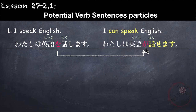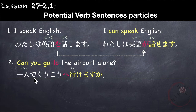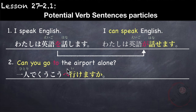Another example: Can you go to the airport alone? ひとりで空港へ いけますか？Our verb is いきます, so it becomes いけますか？As you can see, when the particle is へ it remains the same — we only change を to が. For に and へ particles, they stay the same.